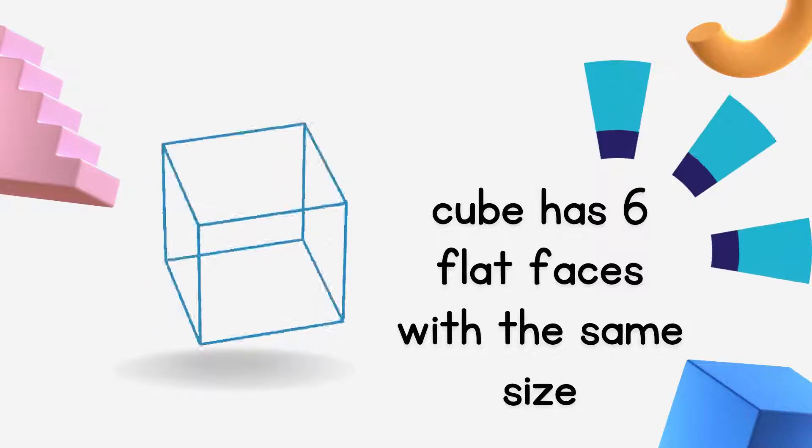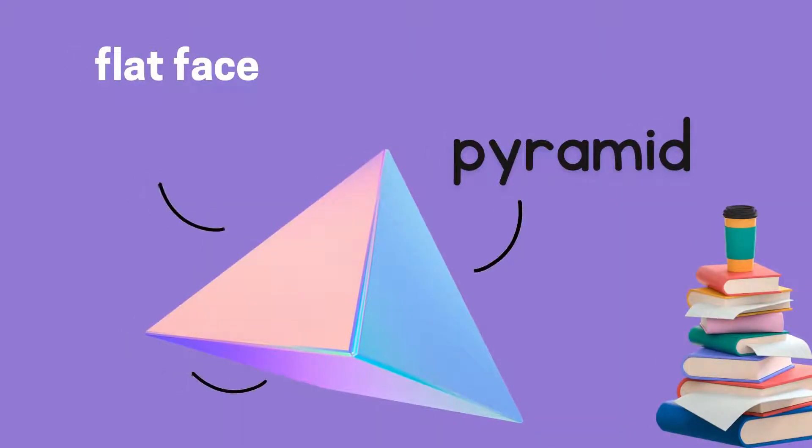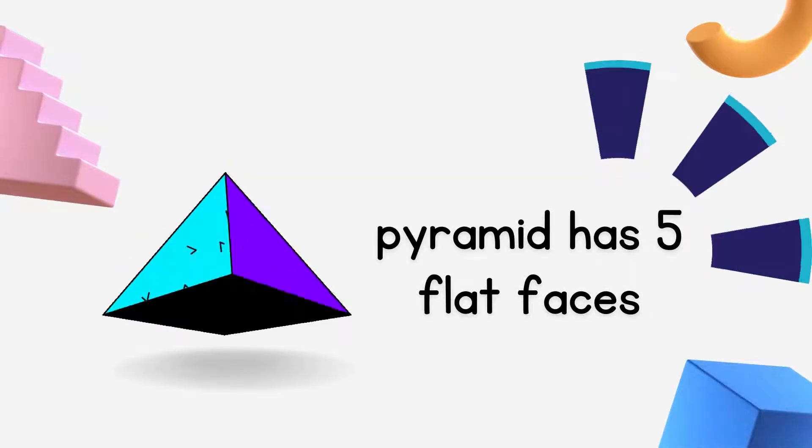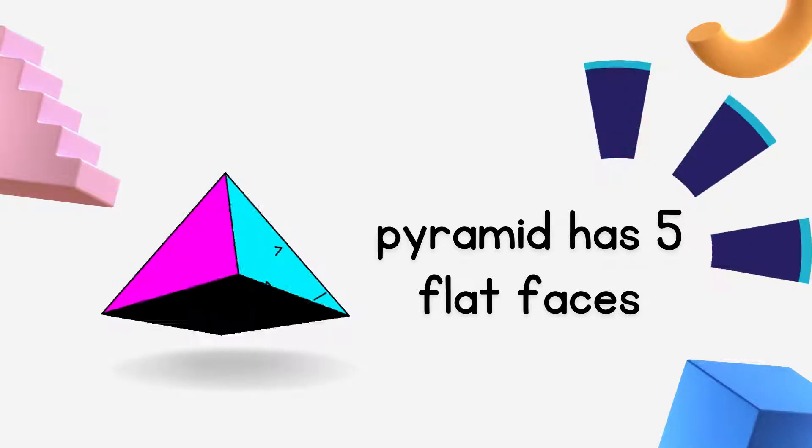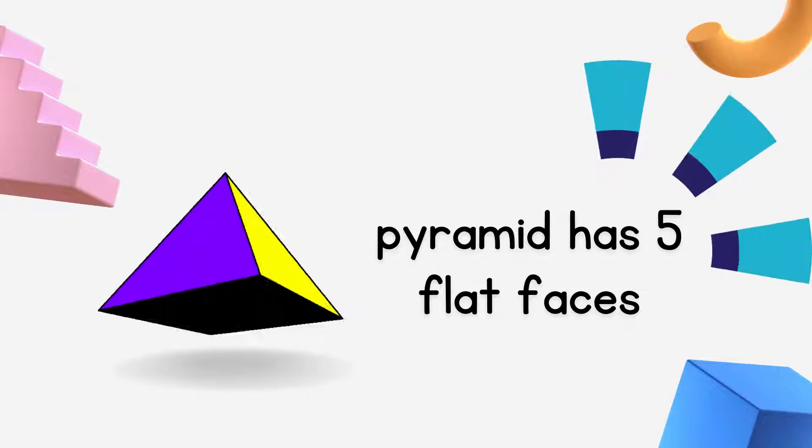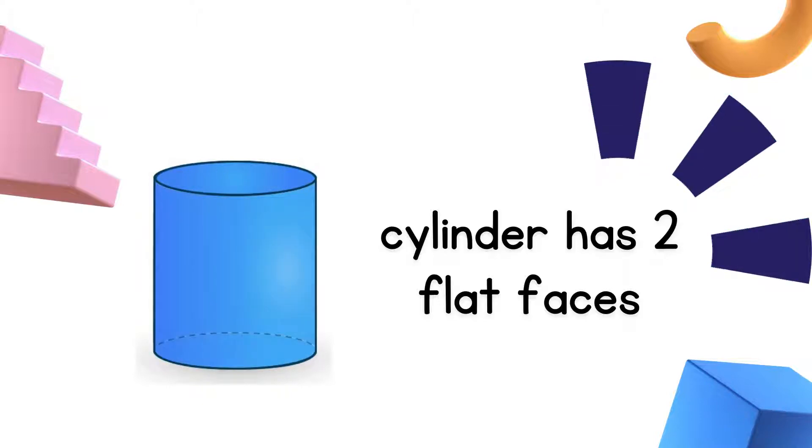Cuboid has 6 flat faces with the same size. Next is Pyramid. Pyramid also has flat faces. Flat faces on Pyramid are 5 faces. Pyramid has 5 flat faces. Next is Cylinder. Cylinder also has flat faces. Cylinder has 2 flat faces.